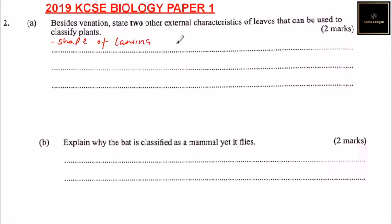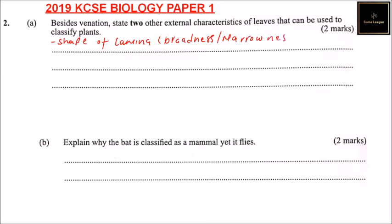One characteristic is lamina — that is, the leaf may be broad or narrow. That is, broadness or narrowness. So that's another characteristic.